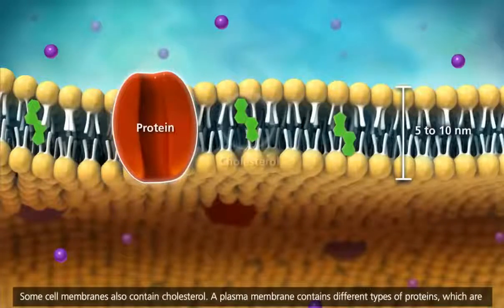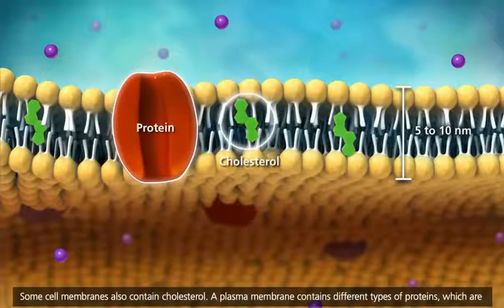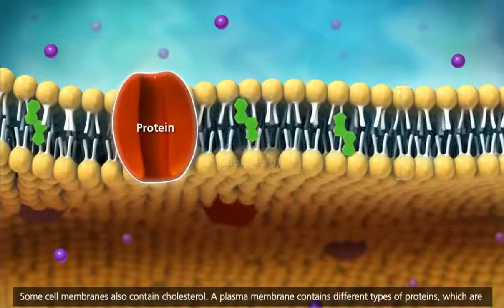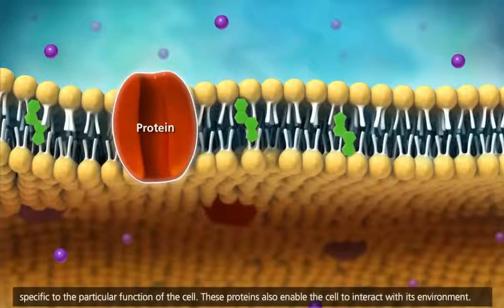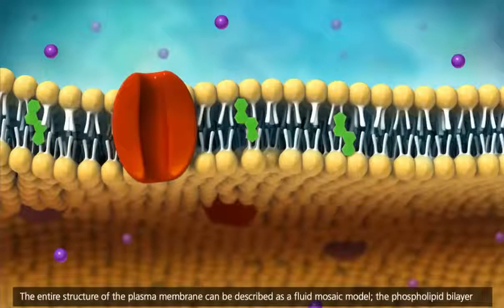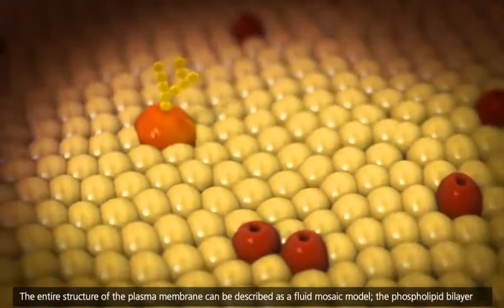Some cell membranes also contain cholesterol. A plasma membrane contains different types of proteins which are specific to the particular function of the cell. These proteins also enable the cell to interact with its environment. The entire structure of the plasma membrane can be described as a fluid mosaic model.